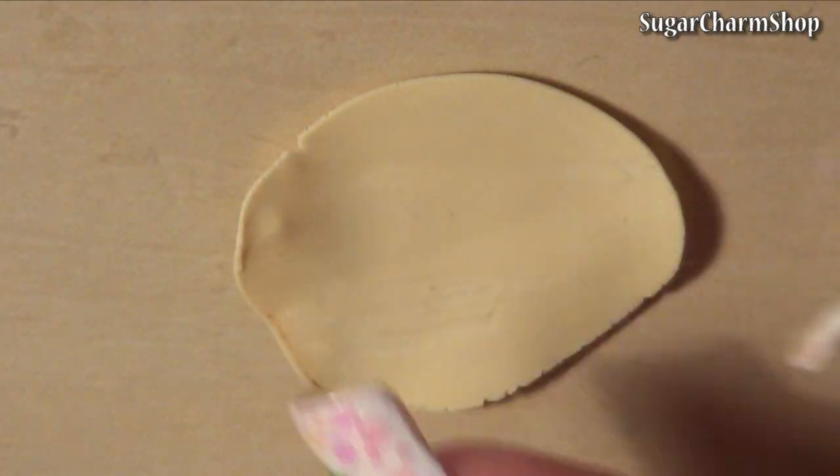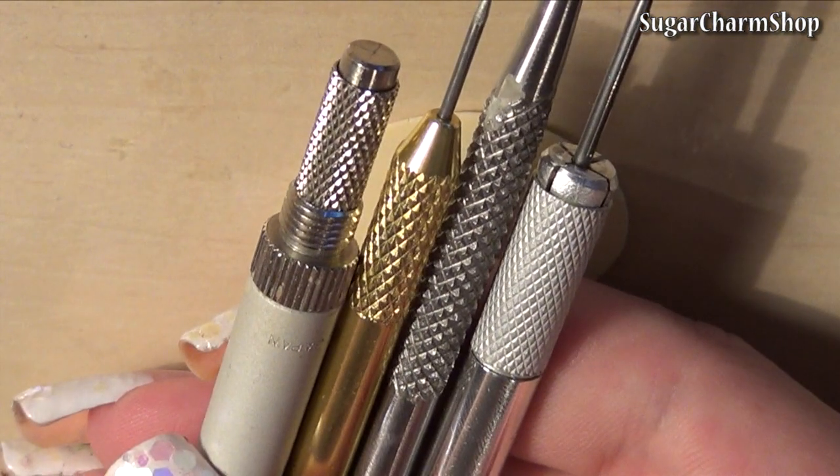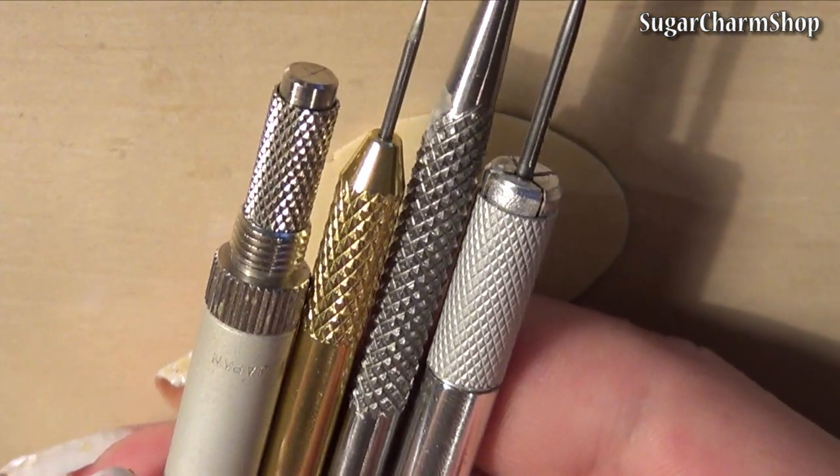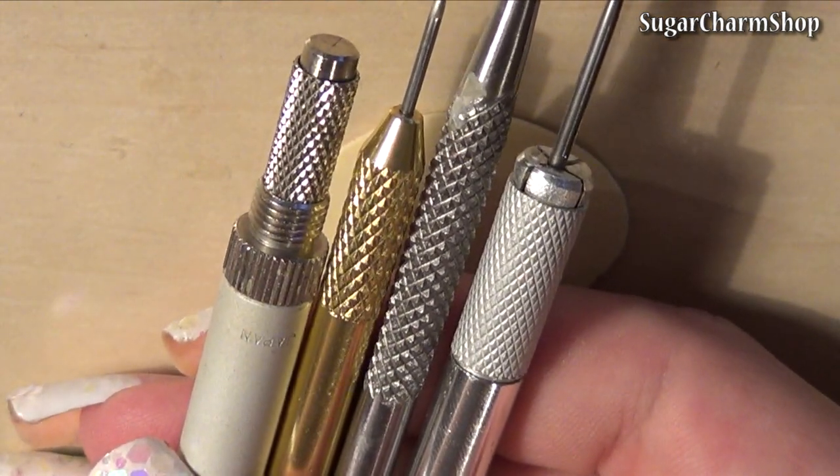Then to make the ice cream cone, roll out a thin sheet of the clay for the cone itself. For the texture, you want to find one of these tools that have this kind of checkered pattern. Most exact knives and similar tools have it.